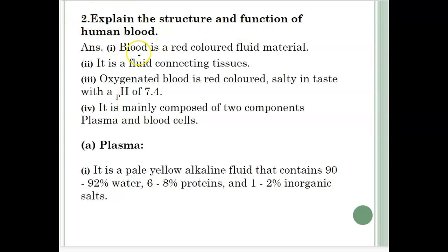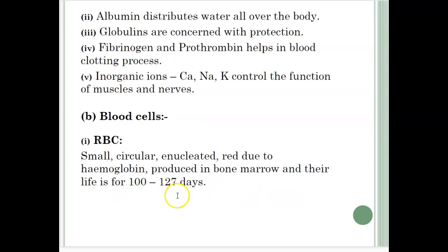Explain the structure and function of human blood. Blood is a red colored fluid material; it is a fluid connective tissue. Oxygenated blood is red colored, salty in taste, with a pH of 7.4. It is mainly composed of two components: plasma and blood cells. Plasma is a pale yellow alkaline fluid that contains 90-92% water, 6-8% proteins and 1-2% inorganic salts. Albumin distributes water all over the body. Globulins are concerned with protection. Fibrinogen and prothrombin help in the blood clotting process. Inorganic ions — calcium (Ca), sodium (Na), potassium (K) — control the function of muscles and nerves.